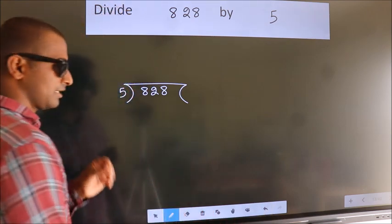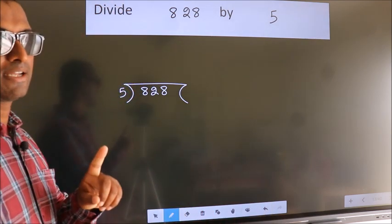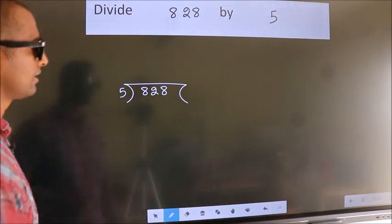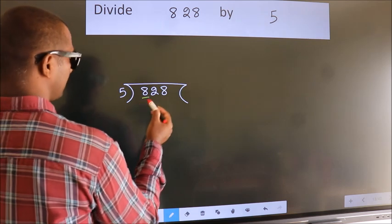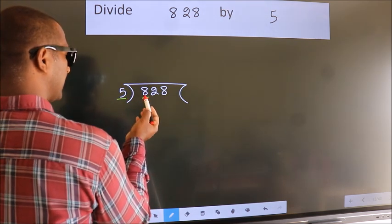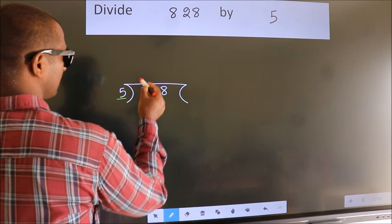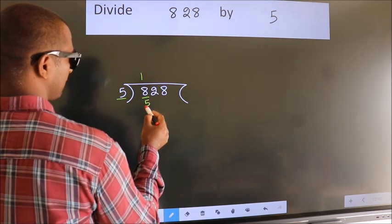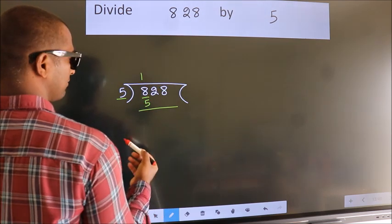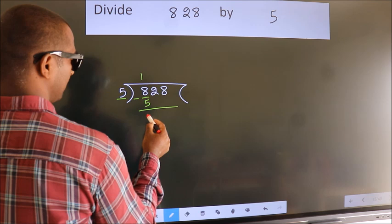This is your step 1. Next, here we have 8, here 5. A number close to 8 in 5 table is 5 once 5. Now, we should subtract. We get 3.